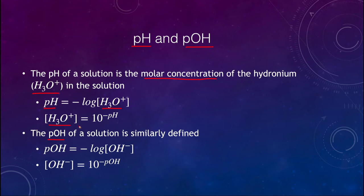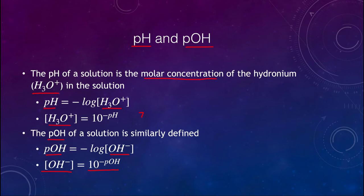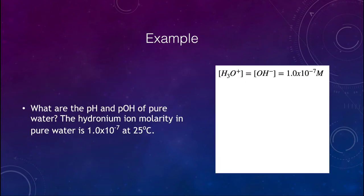So if you had a pH of seven, which is neutral, then the hydronium concentration would be 10 to the negative seventh. The pOH is defined similarly: it's minus the log of the hydroxide concentration, or inversely the concentration is 10 to the negative pOH. Now let's look at an example — the pH and pOH of pure water.